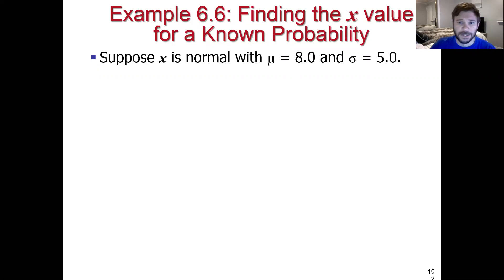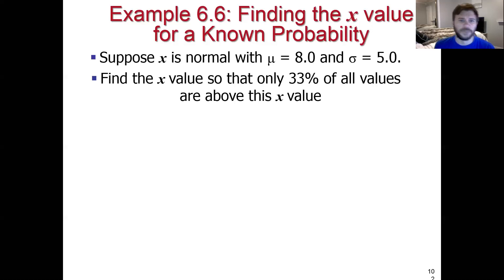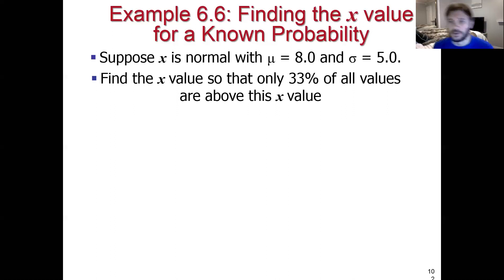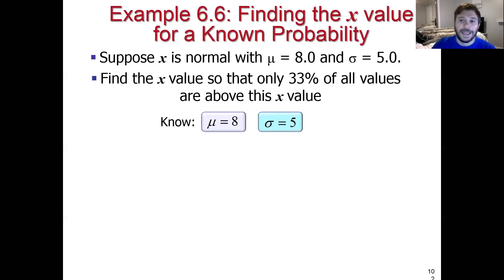So what we're going to do in this last segment related to this topic is we're going to think about reversing that process. Suppose we're given a distribution, and we want to find the X value associated with a particular probability. Before we were given an X value and had to figure out the probability, but now we want to find the X value associated with a particular probability. Given the distribution information, it's always good to start by drawing the graph.